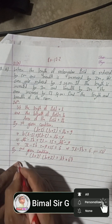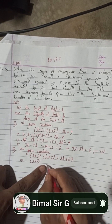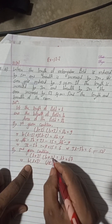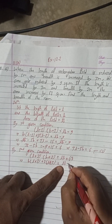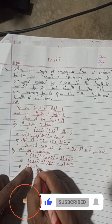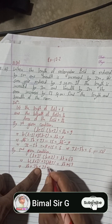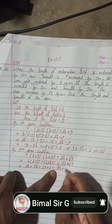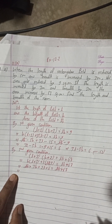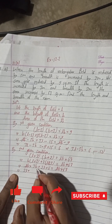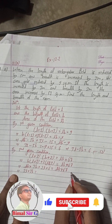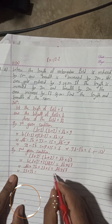Expanding (L + 3)(B + 2) = LB + 67 gives: LB + 3B + 2L + 6 = LB + 67. The LB cancels, leaving 2L + 3B + 6 = 67. Moving 6 to the right gives 2L + 3B = 67 − 6 = 61. So our Equation 2 is: 2L + 3B = 61.